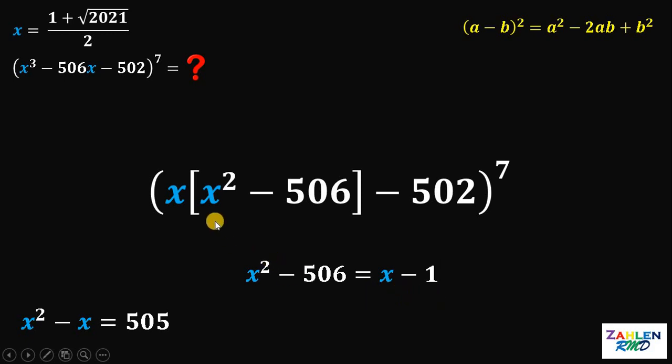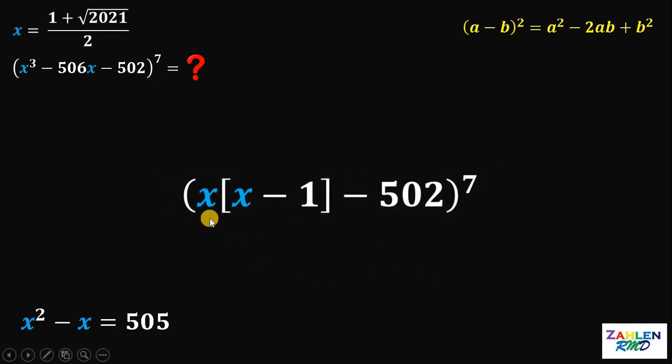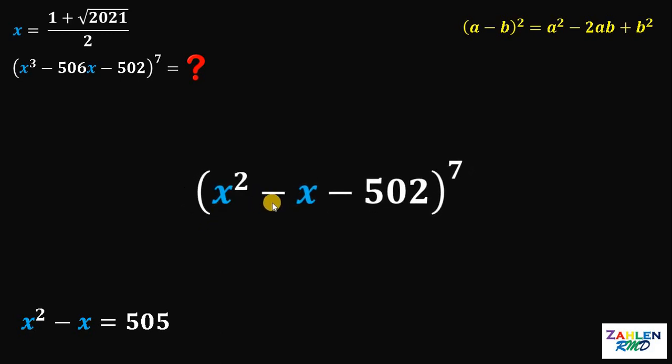This will give us x squared minus 506 equals x minus 1. Therefore, the value of this expression x squared minus 506 is just x minus 1. Now, let's distribute again the variable x. So, this will give us x squared minus x minus 502.